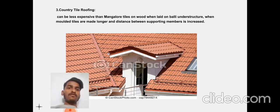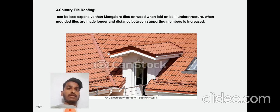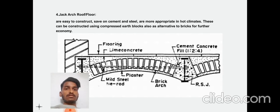Country tile roofing can also be expensive. Mangalore tiles, made with wood, lid, and understructure, are Venice molded tiles made to allow longer distances between the supporting members. Jack arch roof construction uses cement, steel, and appropriate materials suitable for hot climates.